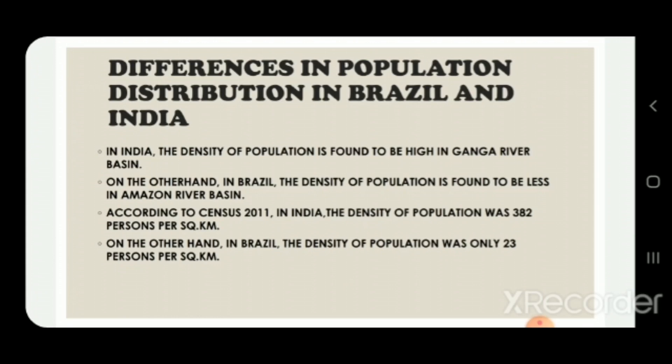According to the census of 2011, in India the density of population was 382 persons per square kilometer. On the other hand, in Brazil the density of population was only 23 persons per square kilometer.